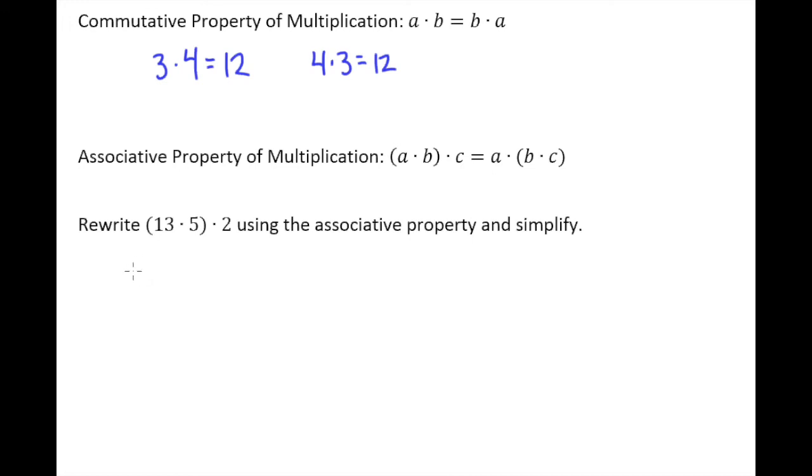And so in this example here we've got (13 times 5) in parentheses, then times 2 after that. And so we're being asked to rewrite this using the associative property and then of course simplify it.